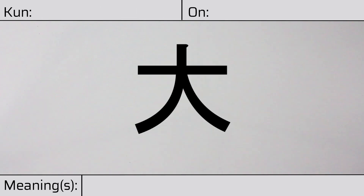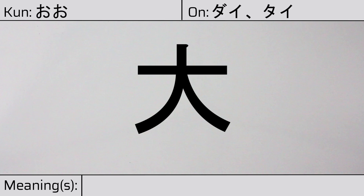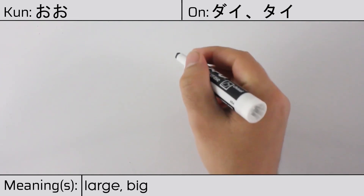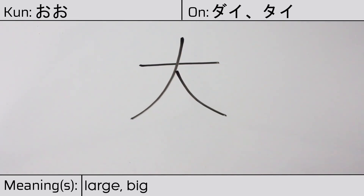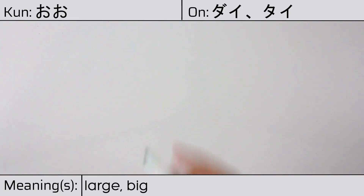Welcome to this lesson on Japanese kanji. Today, we'll be discussing this character. This kanji has a kunyomi or Japanese reading of o, and it has onyomi or Chinese readings of dai or tai. This character has the meanings large or big. Here is the stroke order.